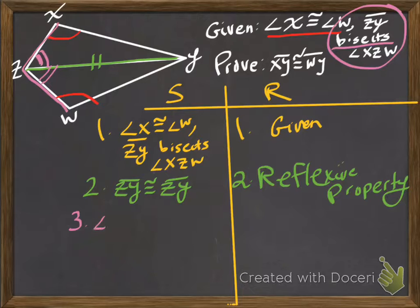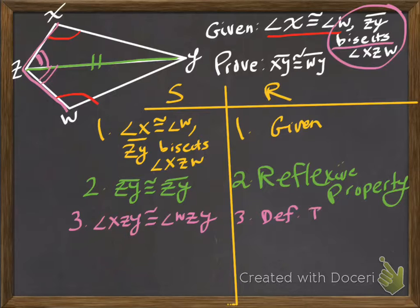So we can now state definitively that angle xzy, the top half of this angle, is the same as angle wzy. We weren't given that fact, but we know it's true because of the definition of bisect. What does it mean to bisect? To cut and make two congruent pieces. So definition of bisect.